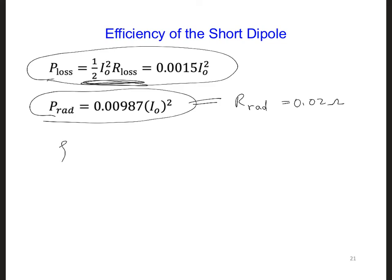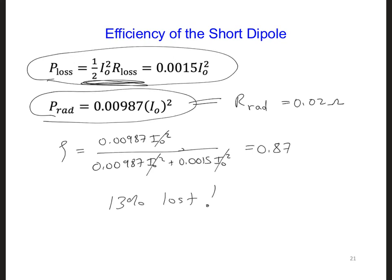And now we can calculate the efficiency of the short dipole is P radiated, so that's 0.00987, and technically there's an I naught squared there, over 0.00987 plus 0.0015, that's P loss, I naught squared. So if we plug all this in, we're going to get 0.87. The I naughts cancel, I naught squared. So this means that 13% of the power we deliver to the short dipole will be lost through ohmic heating. And that's not a particularly efficient antenna.